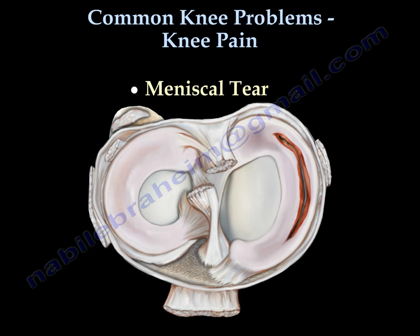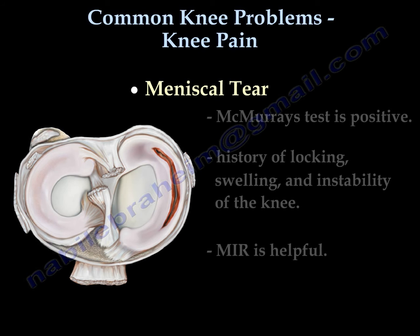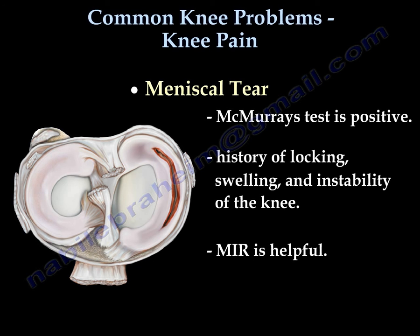The meniscus is the cushion that protects the cartilage of the knee. Injury will cause pain on the medial or lateral side of the knee; the most specific sign is pain at the joint line itself. The outer 30% of the meniscus is rich in blood supply. The tear presents with a history of locking, swelling, and instability of the knee. The McMurray test is usually positive and MRI is very helpful.